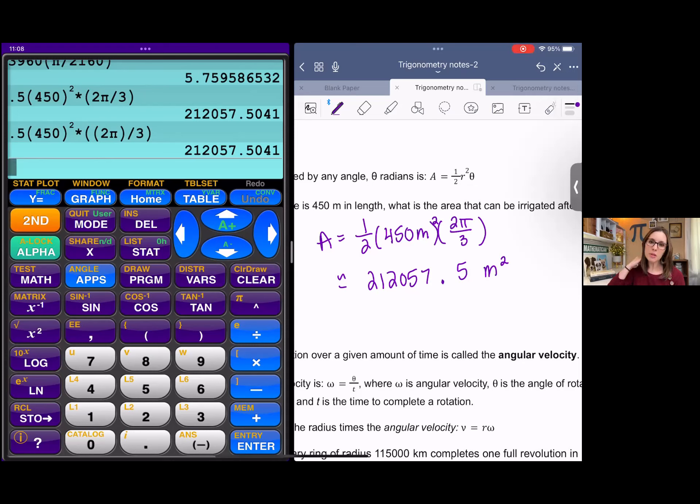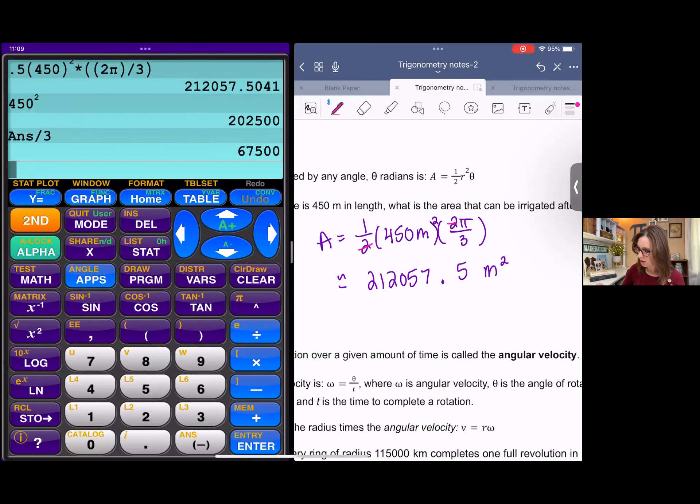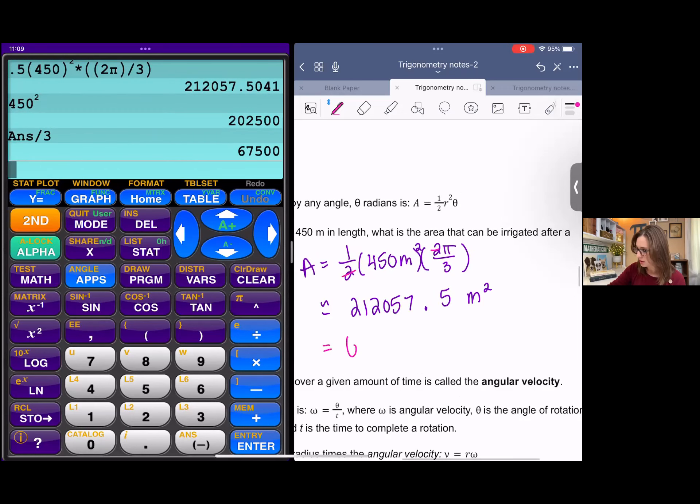If you want to keep this in terms of radians so that we're not approximating, then we can divide the 2s. And then we have 450 squared over 3. And so we would have 67,500 pi meters squared instead. That would be an exact solution if you wanted to have an exact solution in its place. So that's all you have to do for that one.